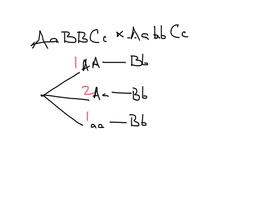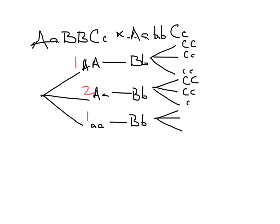Big B little b. And now for C — that again is a heterozygote crossed to a heterozygote, so like A, it's a three-way split for all three A branches. I'm going to get big C big C, big C little c, and little c little c for each branch. The numbers, once again, are 1 to 2 to 1, repeated across all three A branches: 1 to 2 to 1, 1 to 2 to 1, 1 to 2 to 1.